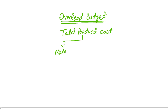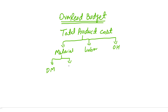The three components are: material, labor, and overhead cost. Material is divided into two costs: direct material and indirect material. Labor cost is also divided into two parts: direct labor cost and indirect labor cost.